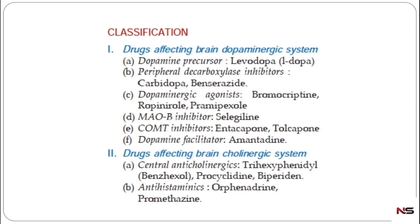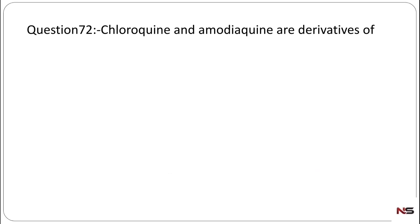This classification is very important because most pharmacy exam papers will have at least one question from it. In this paper it was COMT inhibitor; sometimes they ask which is a dopaminergic agonist. The second class, drugs affecting the brain cholinergic system, includes central anticholinergics such as trihexyphenidyl, procyclidine, biperiden, and antihistaminics such as orphenadrine and promethazine. So the answer to Q71 is tolcapone.